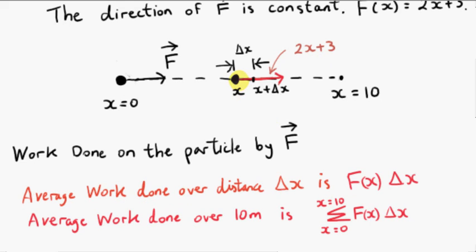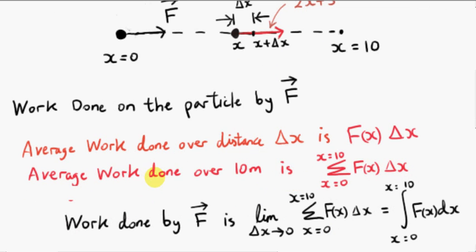Now, we imagine doing this for every increment of length delta x, every increment running from x equals 0 to x equals 10. And we imagine summing all those little works done. We're summing f of x times delta x from x equals 0 to x equals 10. That's the average work done. But we haven't taken the limit as delta x approaches 0. Only then will we get the exact work done by the force.